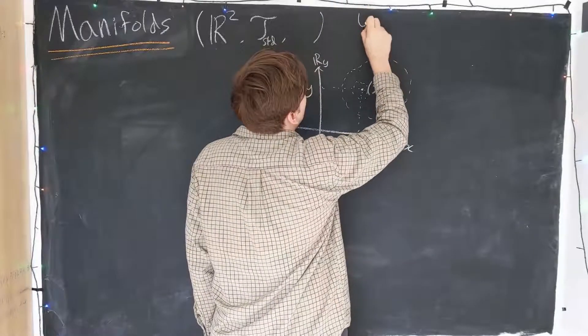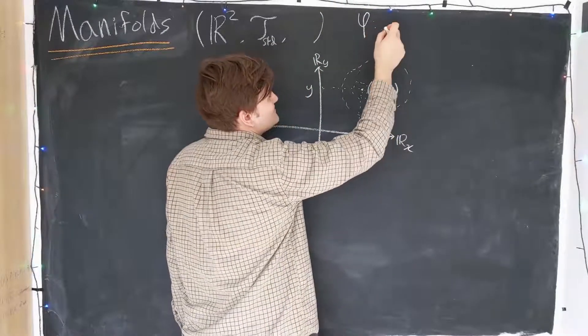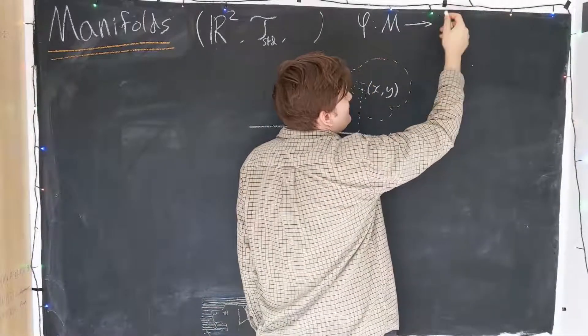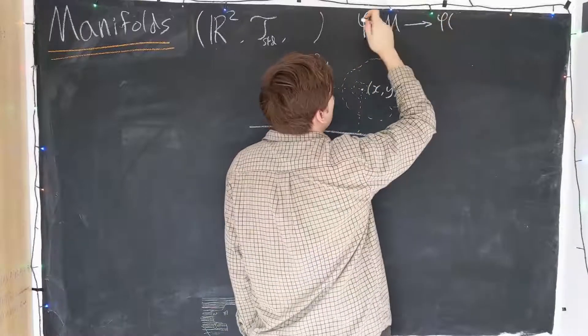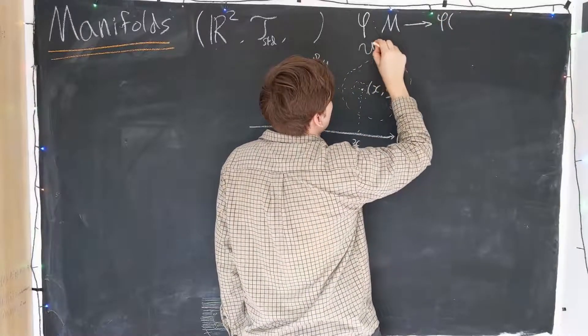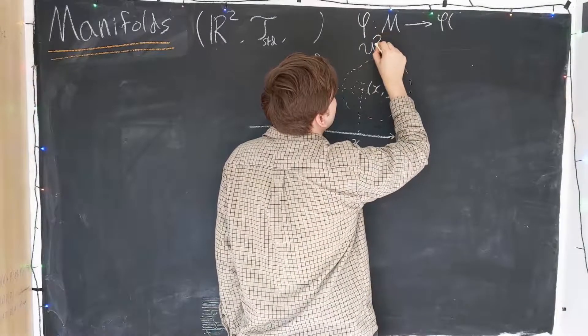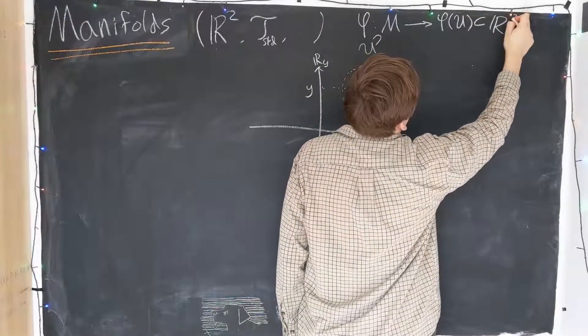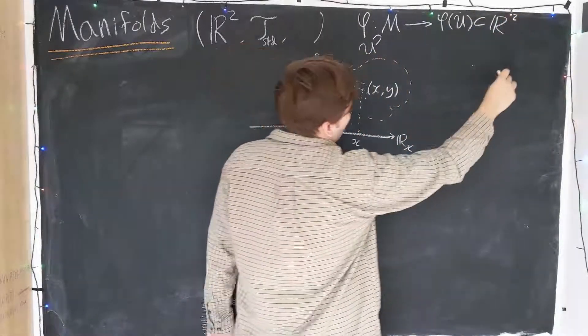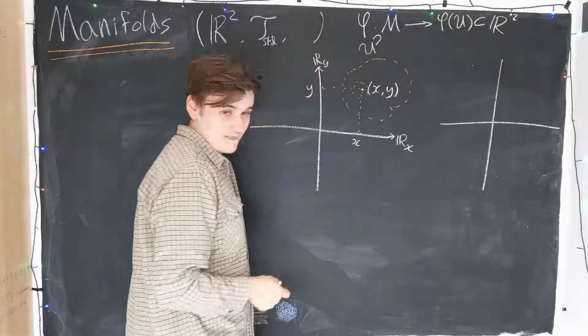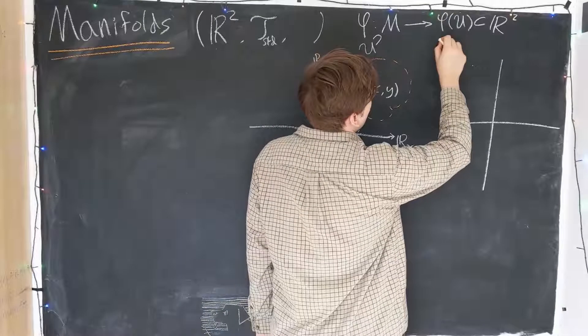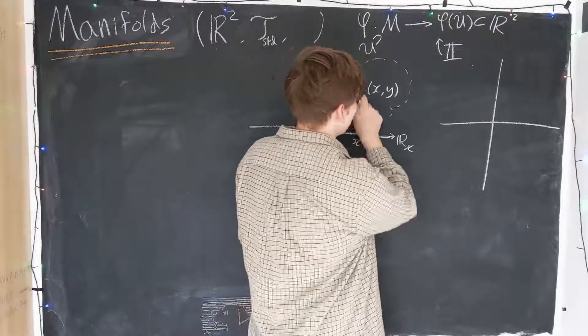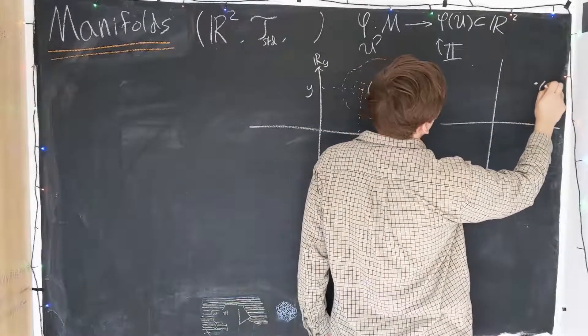We know that the chart map has to be a map from the manifold into the image of the chart map. So the chart map maps some subset of M into its image, which is a subset of R, in this case R². So we're mapping into another copy of R². So the simplest possible map we could do would just to let this map be the identity map.